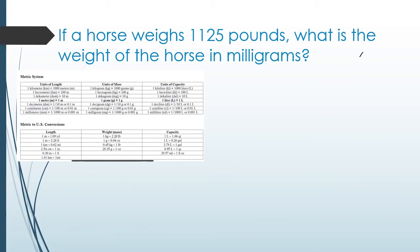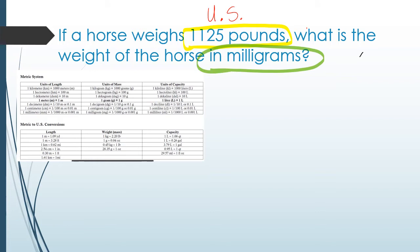Here's our problem: if a horse weighs 1,125 pounds, what is the weight of the horse in milligrams? The first thing you want to think about is the unit you're currently in and the unit you need to convert to. We are currently in the US system in pounds, and we want to convert that to milligrams, which means we are going to the metric system. So we're going from pounds in the US system to milligrams in the metric system.